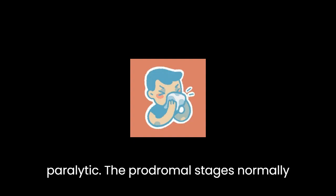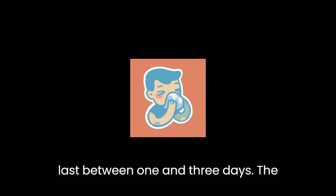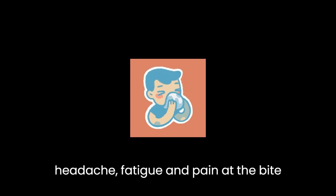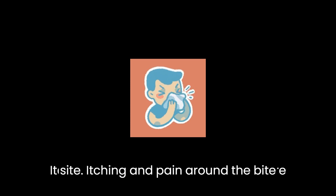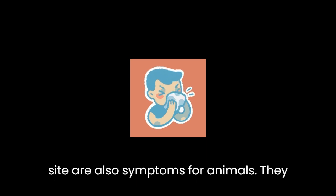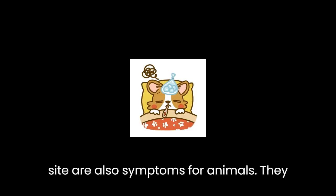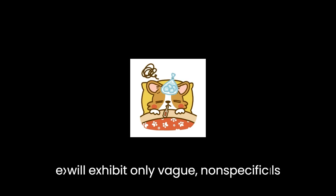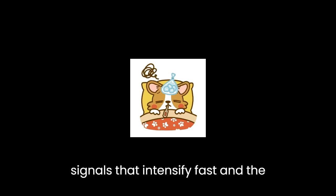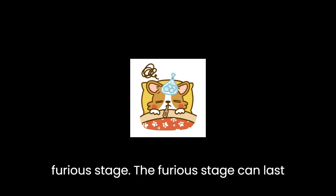The prodromal stage normally lasts between one and three days. The symptoms are flu-like, with fever, headache, fatigue, and pain at the bite site. Itching and pain around the bite site are also symptoms. For animals, they will exhibit only vague, nonspecific signals that intensify fast as the furious stage approaches.